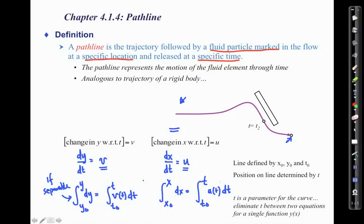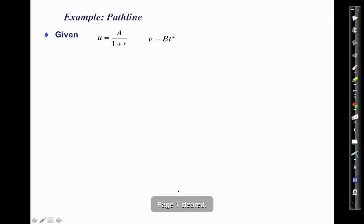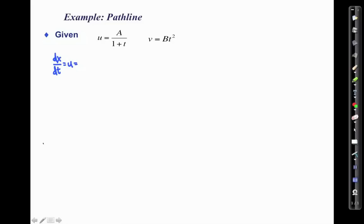Let's do an example where we integrate analytically. We'll use the same velocity field from the streamline example. We write dx/dt = u = a / (1 + t) and dy/dt = v = b·t².